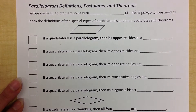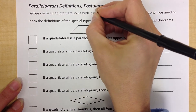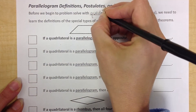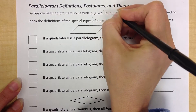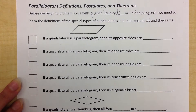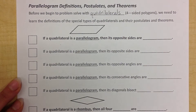We first need to talk about some definitions of some special types of quadrilaterals. A quadrilateral is just a four-sided figure. To do the problem solving, we have to know these properties and memorize them.